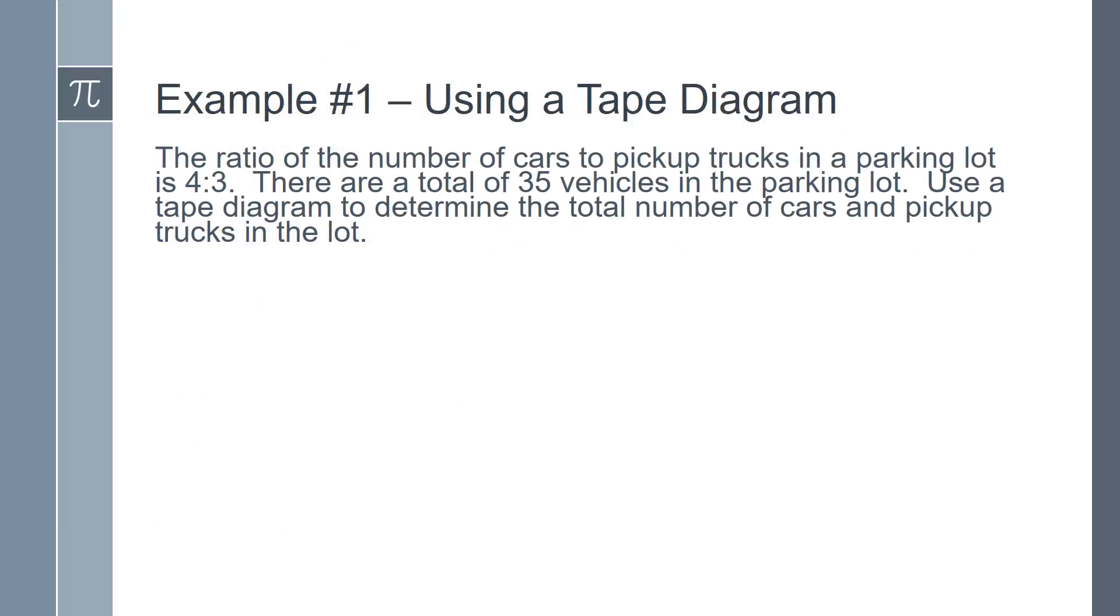Example number 1. The ratio of the number of cars to pickup trucks in a parking lot is 4 to 3. There are a total of 35 vehicles in the parking lot. Use a tape diagram to determine the total number of cars and pickup trucks in the lot.